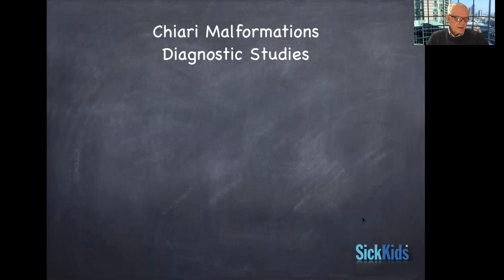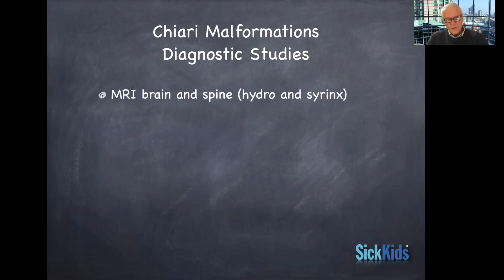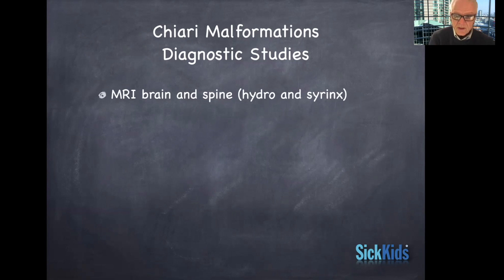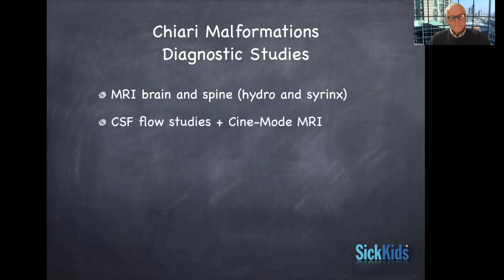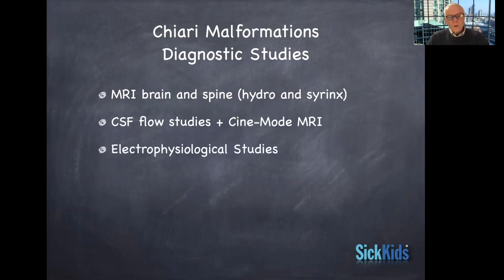There are some diagnostic studies you've learned of already. The best to date is the MRI, both of the brain and the spine, to diagnose whether there's hydrocephalus or syrinx, and to get a characterization of the crowding in the posterior fossa. There are also flow studies that can be done, typically on MRI using a sequence called cine mode MR.